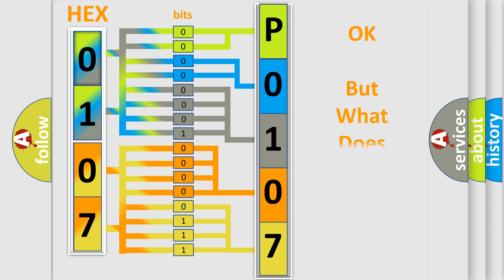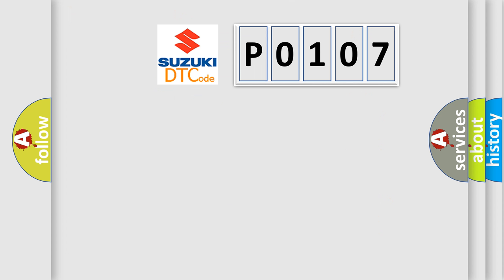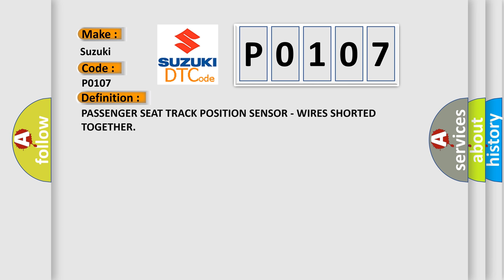The number itself does not make sense to us if we cannot assign information about what it actually expresses. So, what does the diagnostic trouble code P0107 interpret specifically for Suzuki car manufacturers? The basic definition is: Passenger seat track position sensor, wires shorted together.